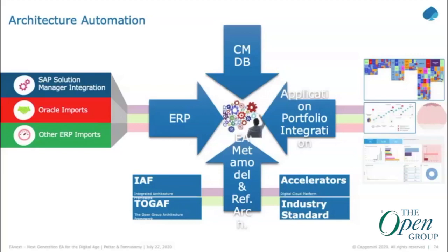In some cases, asset and process information will be stored as configuration items in CMDB data sources. Modern EA tools have plugins to sync that information into the EA repository. Some plugins or product features may not be compatible with current CMDB sources, but EA tools have flexibility to import based on Excel-based processes. In some cases, application-level information is retained in application portfolio management tools, which is essential when making decisions for digital transformation and can also be integrated into the EA repository.